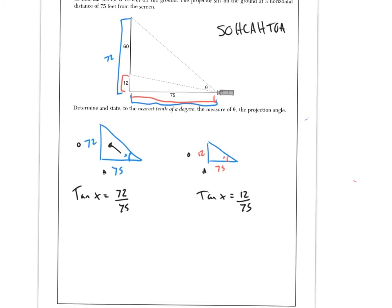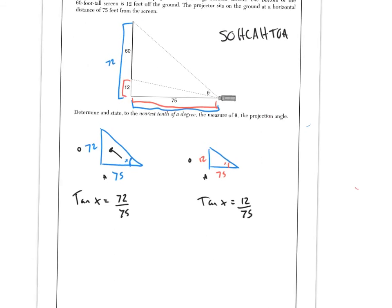Now, when you're looking for an angle in trig, remember you just use the inverse functions. So let's do that. The tan inverse, tan inverse on both sides cancels out. We bring down our x. X is equal to tan inverse of 72 over 75. This is going to find our bigger angle. And over here, we have tan inverse. We're going to do tan inverse on both sides. Tan inverse cancels. X equals tan inverse 12 over 75.